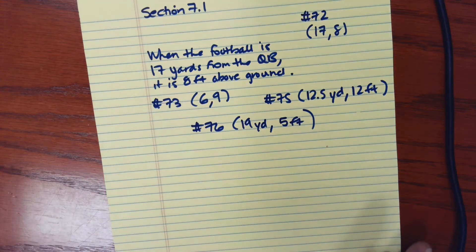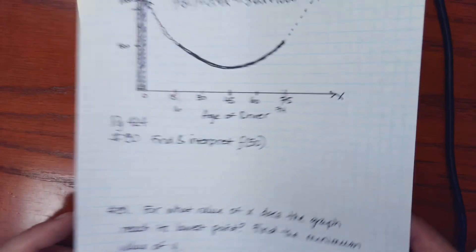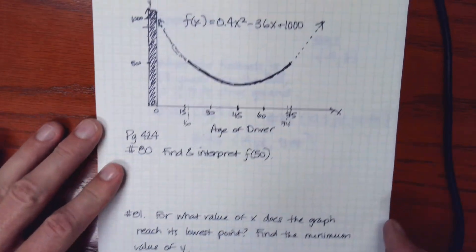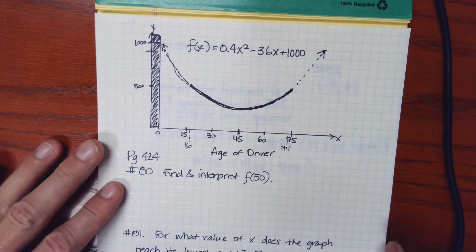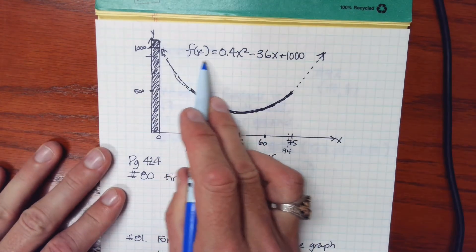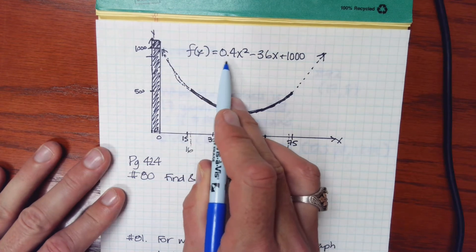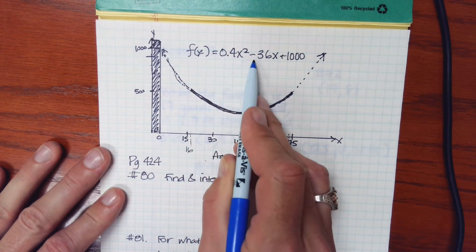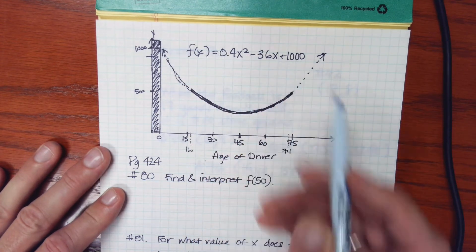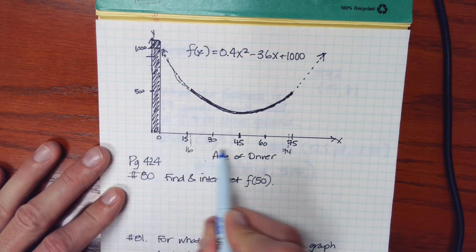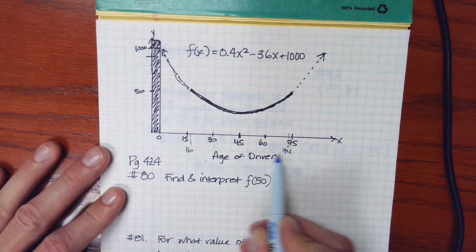Another example I'll show you. Let's see. I have a graph here of a function. Here's how the function is defined. We have 0.4 times x squared minus 36x plus 1,000. What is this? So along here, we have the age of a driver.